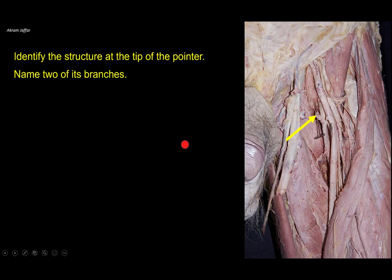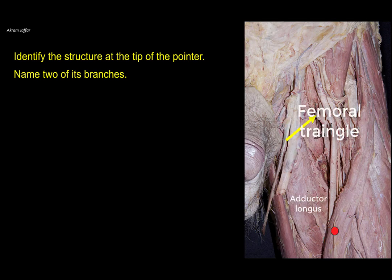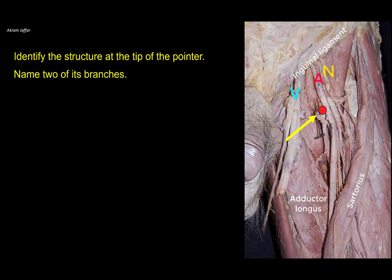Identify the structure at the tip of the pointer and name two of its branches. This structure is located in the femoral triangle. Look at the boundaries: adductor longus, sartorius, inguinal ligament. The three main structures here are the femoral nerve, femoral artery, and the femoral vein. So this is a branch of the femoral artery.